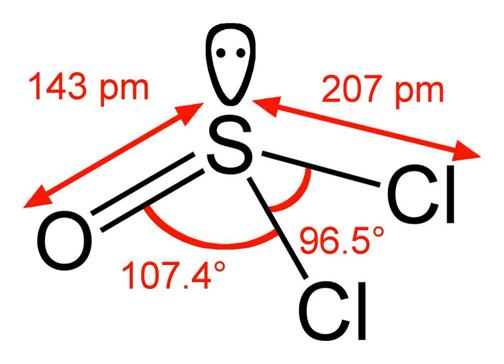As SOCl2 reacts with water it can be used to dehydrate various metal chloride hydrates, such as magnesium chloride hexahydrate, aluminum chloride hexahydrate, and iron(III) chloride hexahydrate. This conversion involves treatment with refluxing thionyl chloride and follows the following general equation: MClN·xH2O plus xSOCl2 yields MClN plus xSO2 plus 2xHCl.